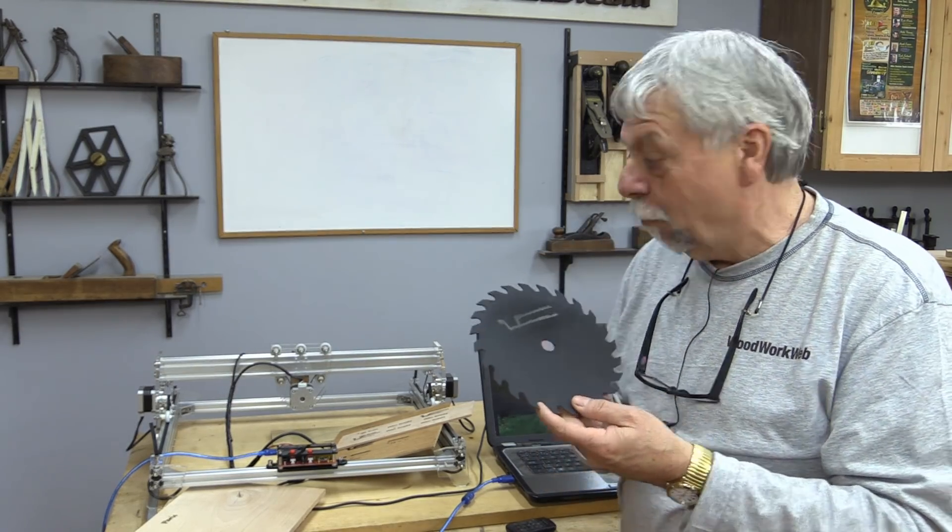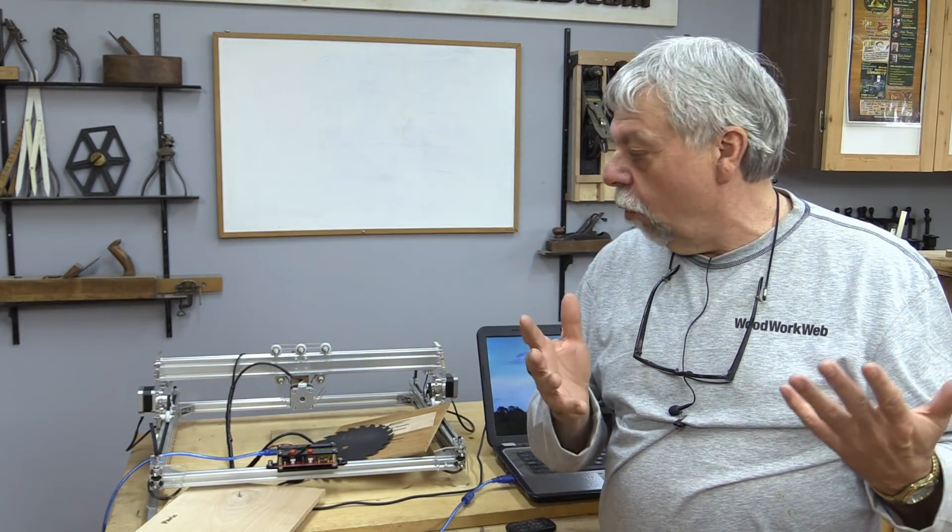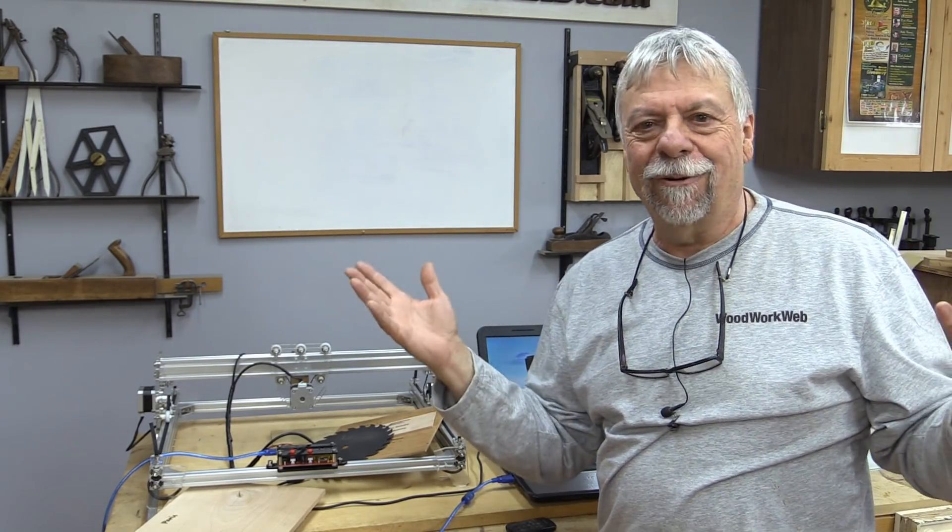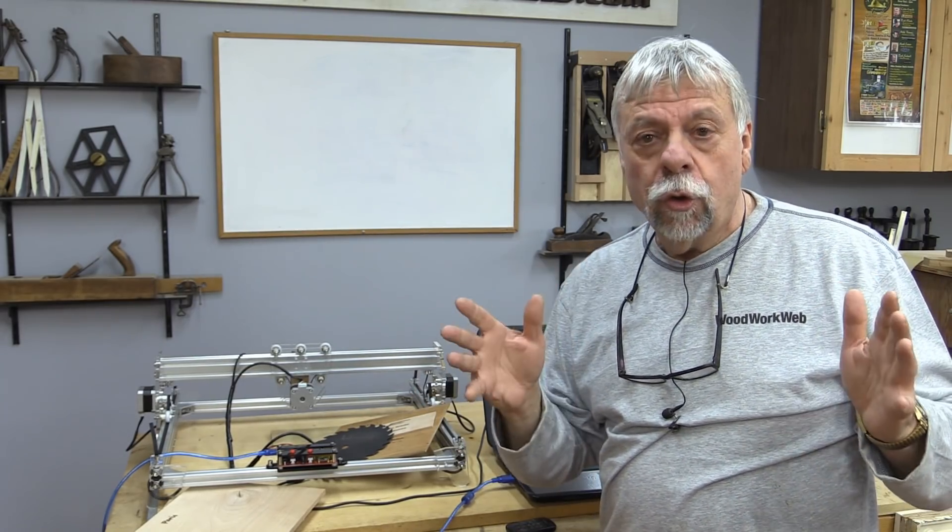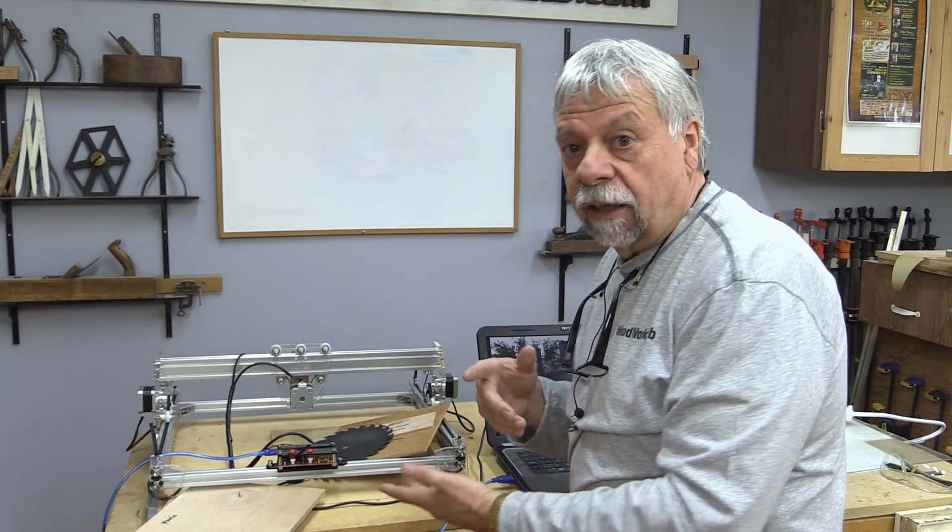I took an old saw blade that I had, just painted it black, and look - I even etched on it. I etched the Woodwork Web logo. But you know, these tools are so amazing. If all you want to do is print pictures of butterflies and flowers, that's one thing, but these can be made a tool for the workshop.